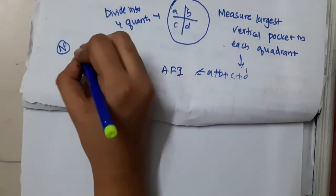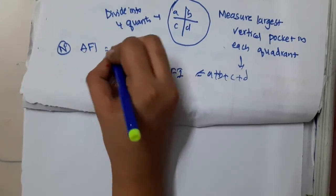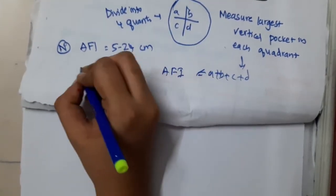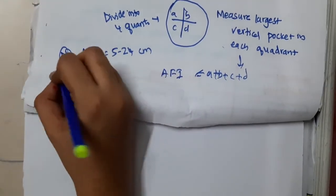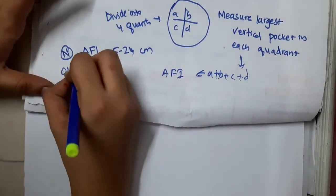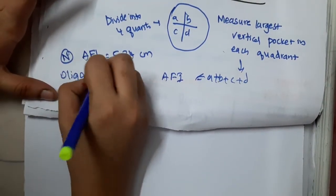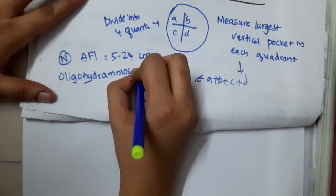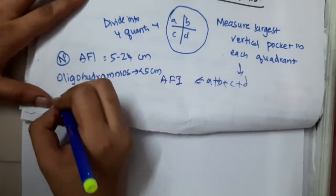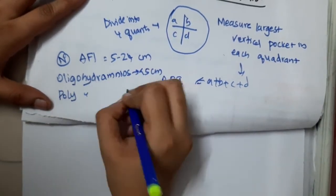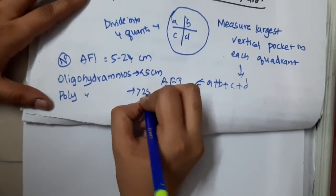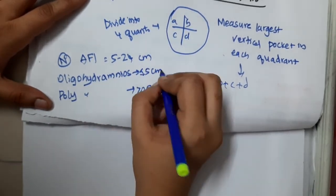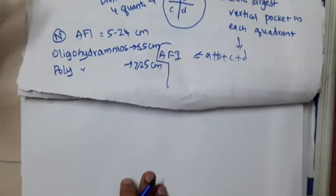The normal amniotic fluid index is 5 to 24 cm. Oligohydramnios is called if it is less than 5 cm. Polyhydramnios is if it is more than or equal to 25 cm.